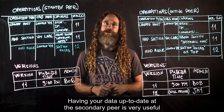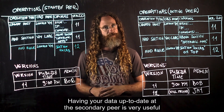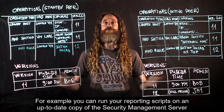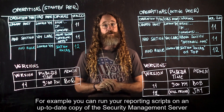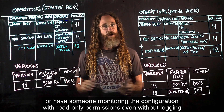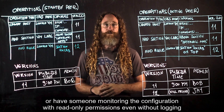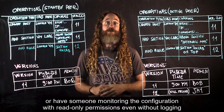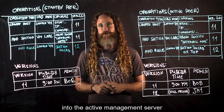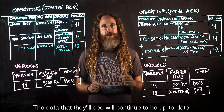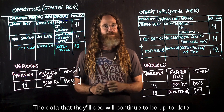Having your data up-to-date at a secondary peer is very useful. For example, you can run your reporting scripts on an up-to-date copy of the security management server, or have someone monitoring the configuration with read-only permissions, even without logging into the active management server. The data that you see will continue to be up-to-date.